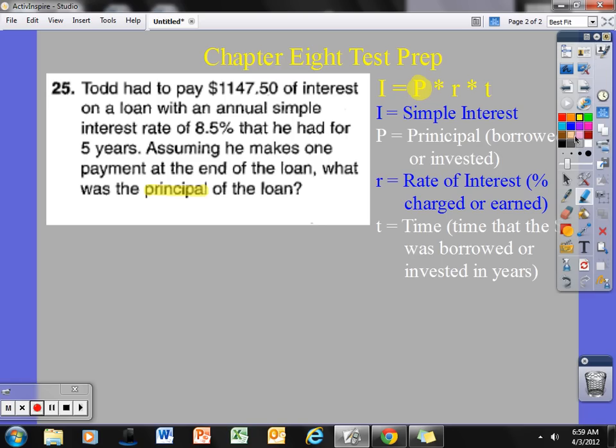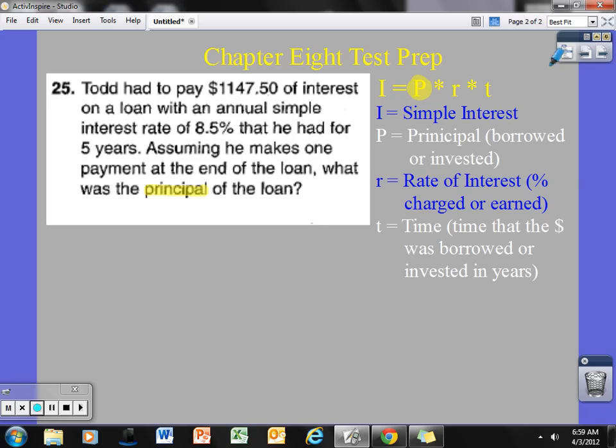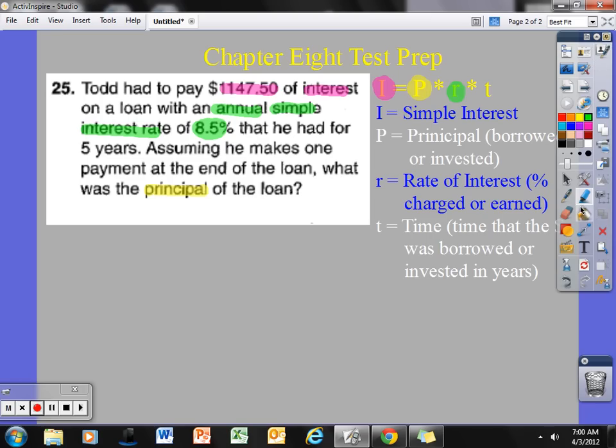That means I am given all the other variables. Todd had to pay $1,147.50 of interest, so that must be the interest, that is my I on a loan with an annual simple interest rate of 8.5%. So, that is my rate of interest, that is my R. And he had that for five years, so there is my time, five years.